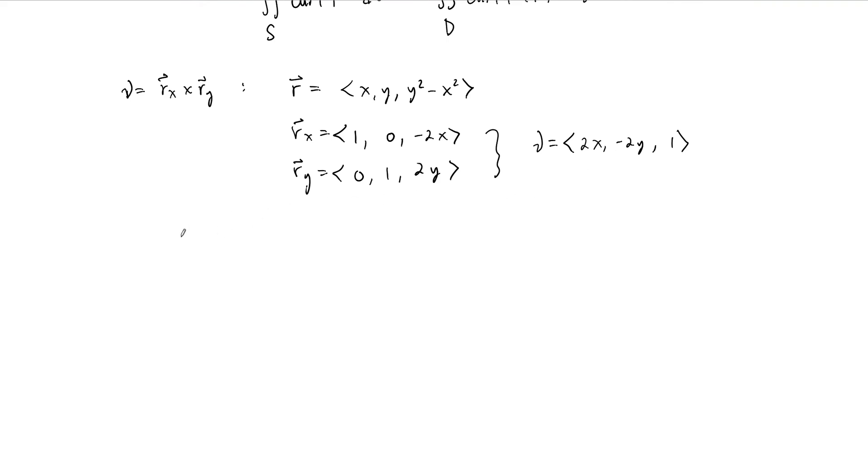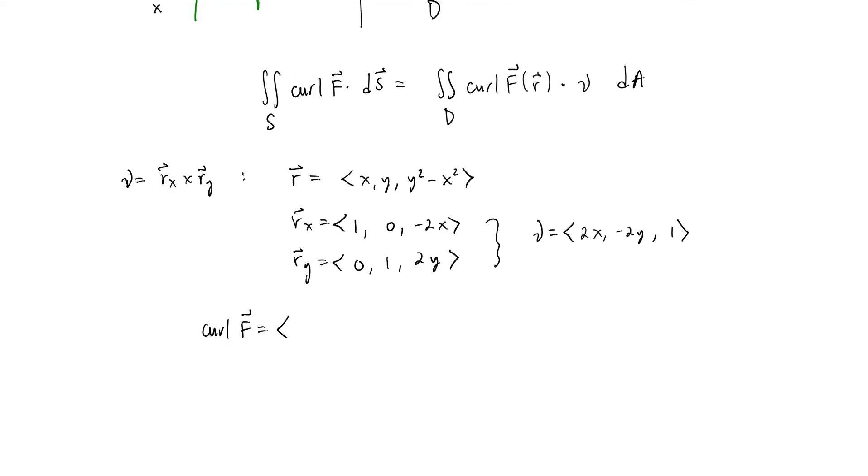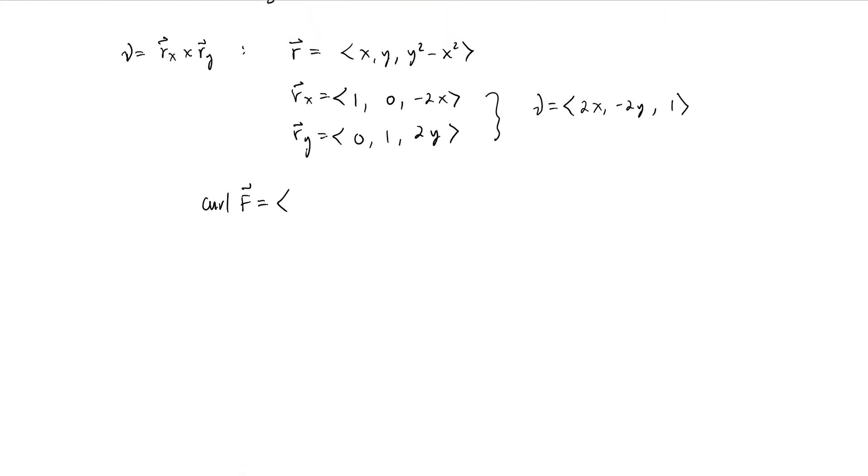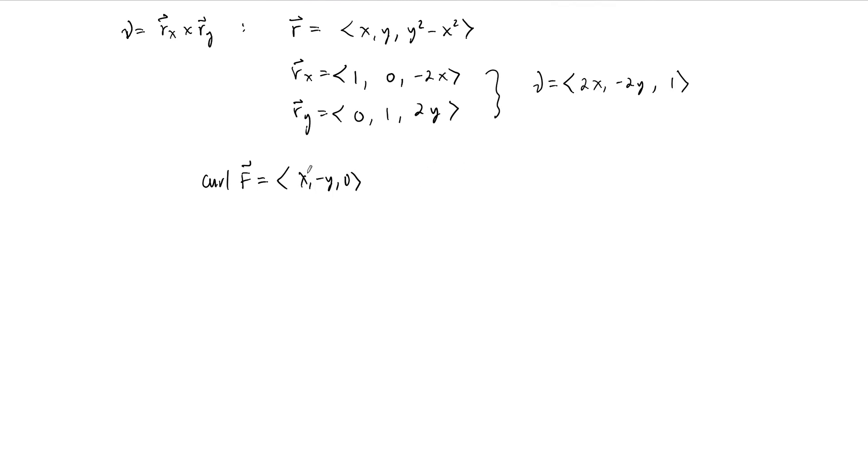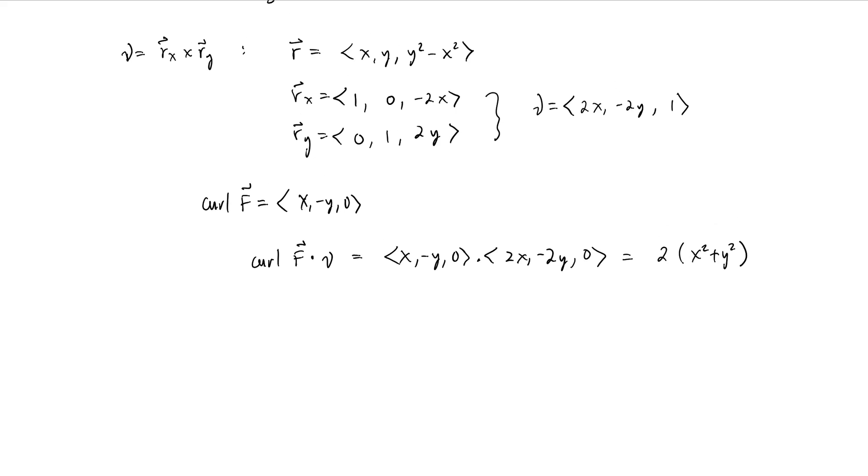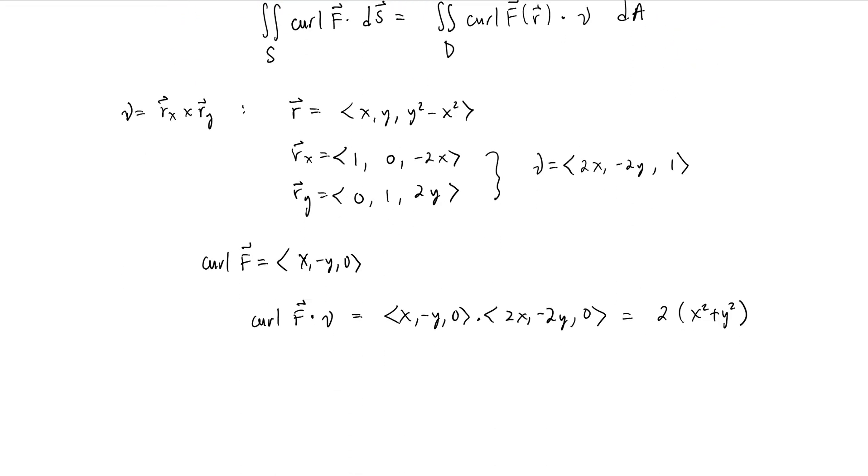And at this point, we can go back and we can look at our curl of f. The curl of f is just x minus y and then 0. And because there's no z's in here, then this is exactly what we want to use. And our nu vector we just wrote down. So what we end up with is the integrand. The term that we have to integrate is the curl dotted with nu. So it's x minus y, 0 dotted with 2x, minus 2y, 0. And what we end up with is 2 times x squared plus y squared.